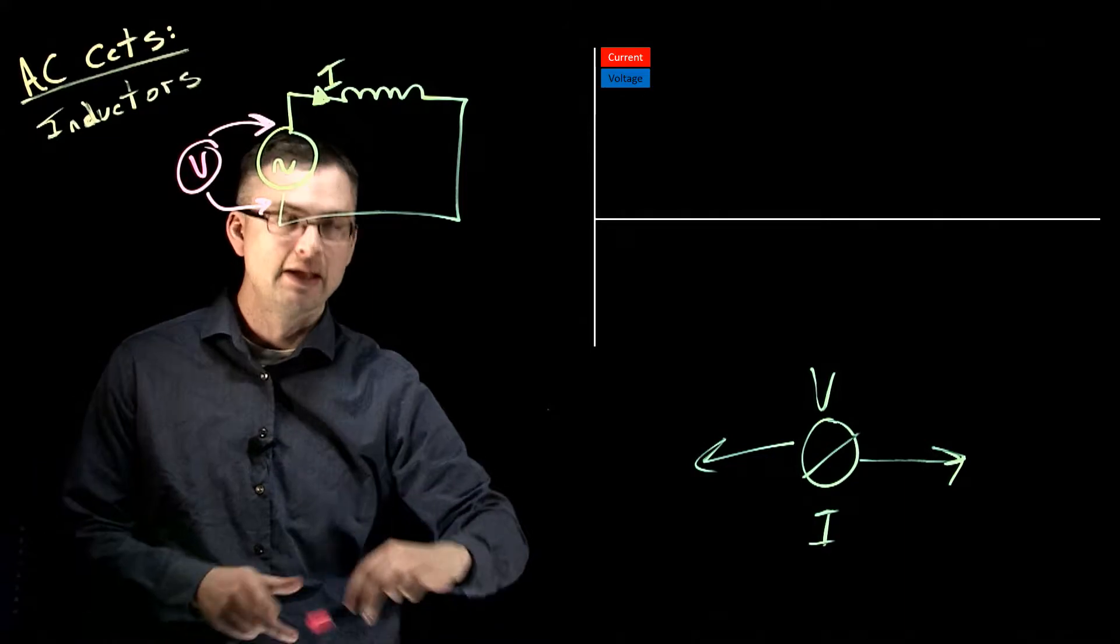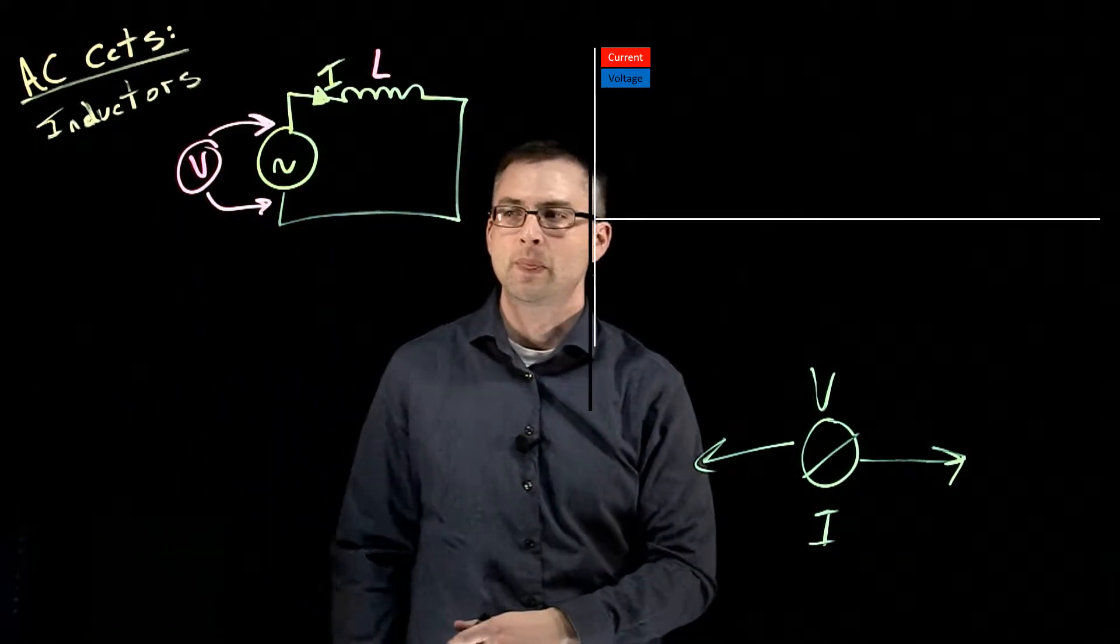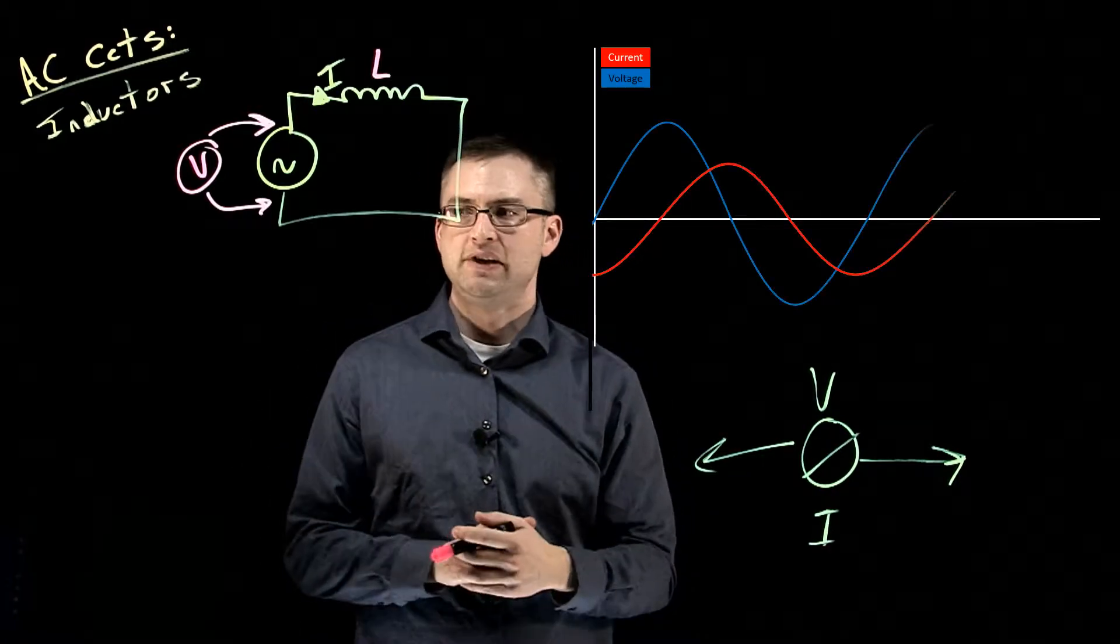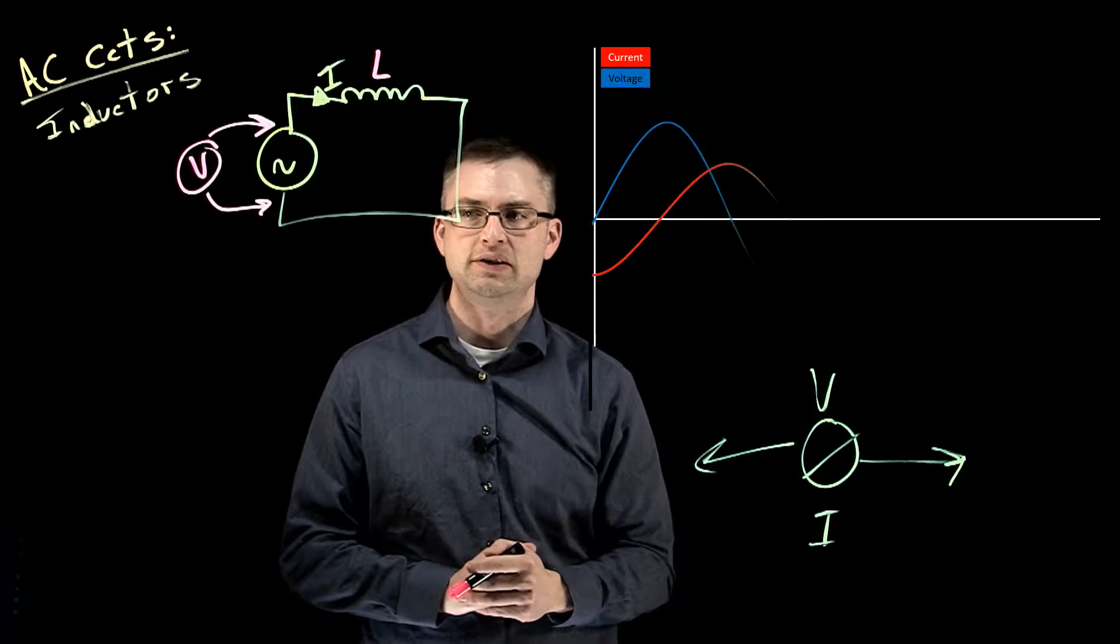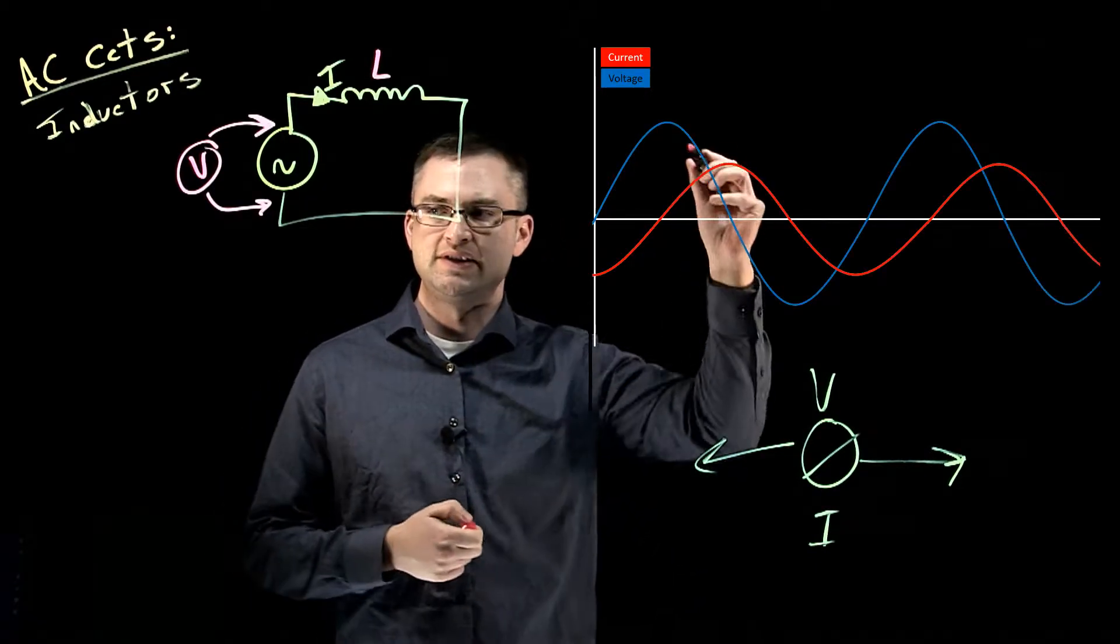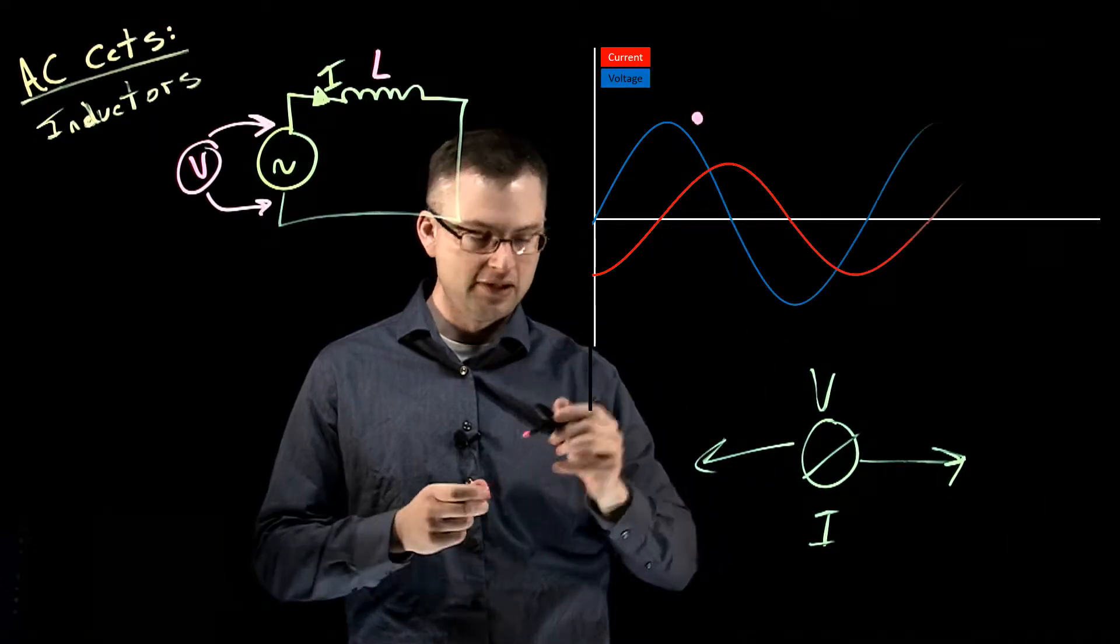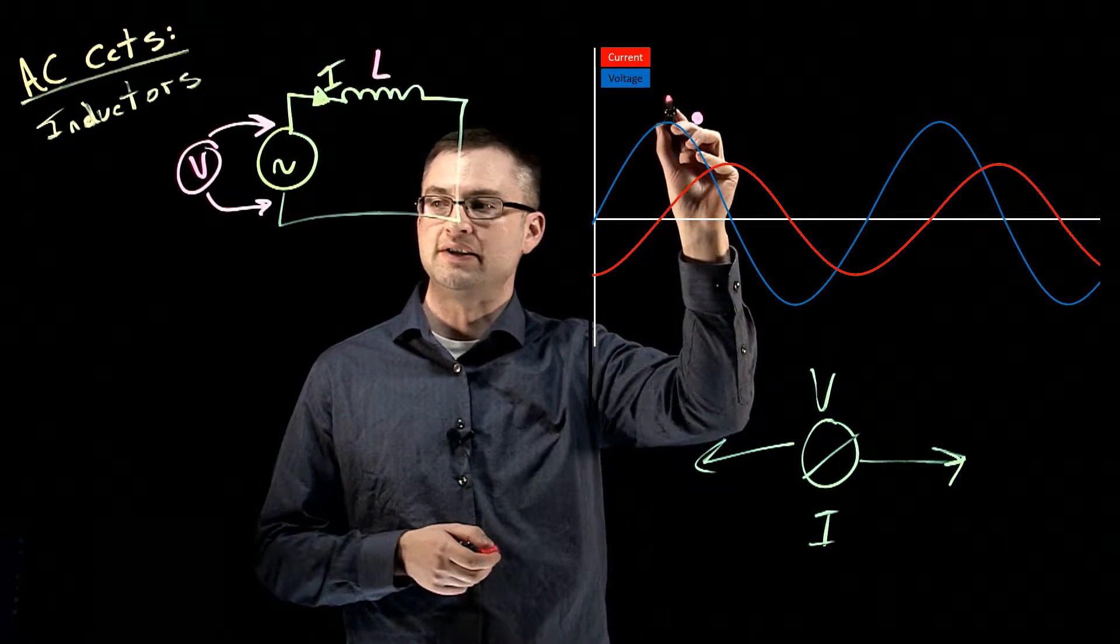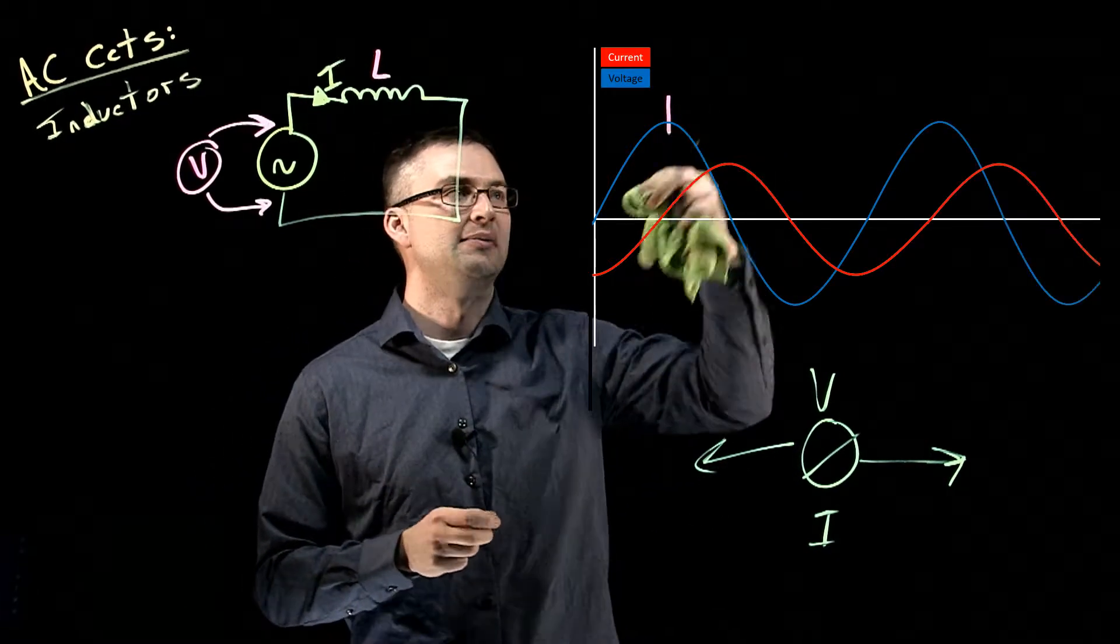So I've got my inductor here. Let's take a look and see what that looks like. We have our voltage in blue and our current in red. We can see that our voltage is peaking up here, and our current is actually lagging behind.